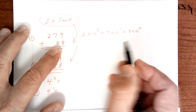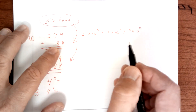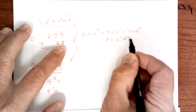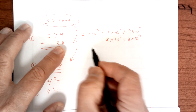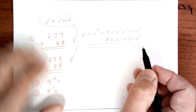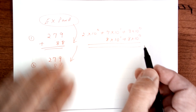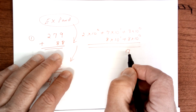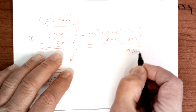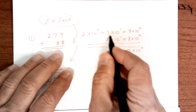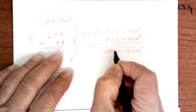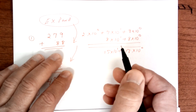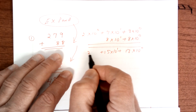Here it's going to be 8, so it's going to be 8 times 10 to the first power plus 8 times 10 to the zero power. And so when you add this up, you're going to add up these front numbers. So you're going to get 17 here times 10 to the zero power, and then here you're going to get 15 times 10 to the first power, and then this one is just going to stay as 2 times 10 to the second power.